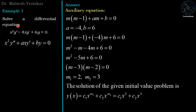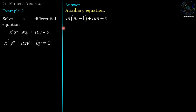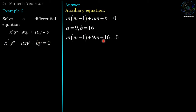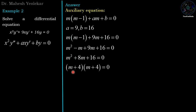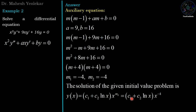Example 2: Solve the differential equation x squared y double dash plus 9xy dash plus 16y equal to zero. We generate the auxiliary equation of the form m(m minus 1) plus am plus b equal to zero, where a equal to 9 and b equal to 16. Substituting gives m(m minus 1) plus 9m plus 16 equal to zero, which simplifies to m squared plus 8m plus 16 equal to zero. Factorizing: (m plus 4)(m plus 4) equal to zero. So m1 equal to minus 4 and m2 equal to minus 4 — they are real and equal. Therefore the solution is y equal to (c1 plus c2 ln x) times x power minus 4.